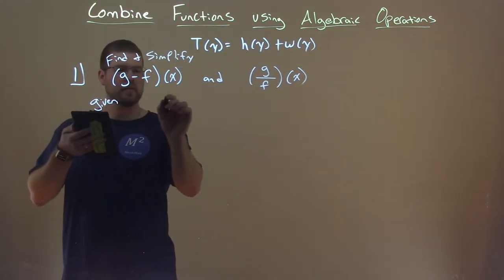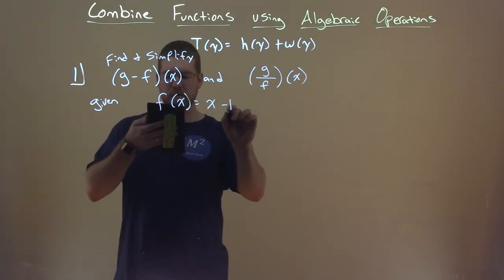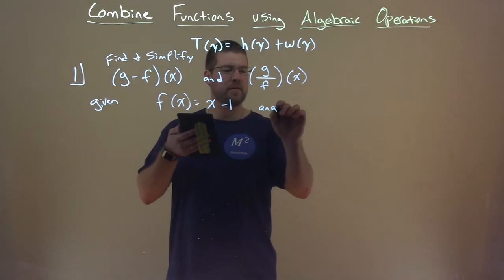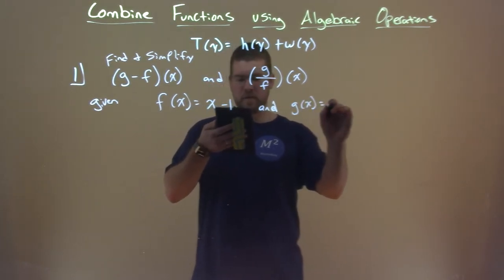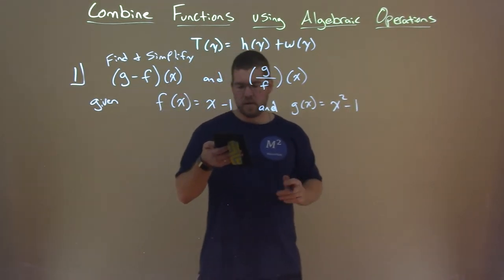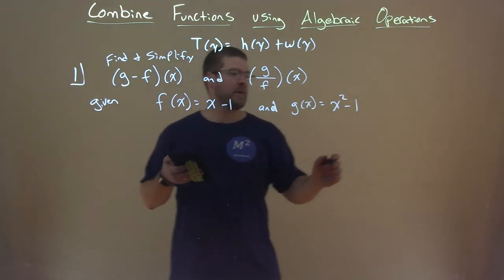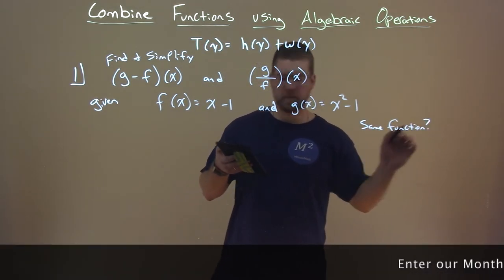Given these two things: given that f of x is equal to x minus one, and g of x is equal to x squared minus one. Okay, and are they the same function?